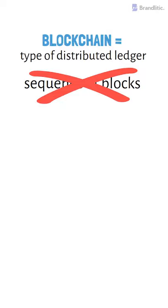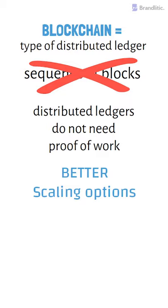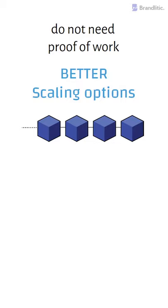Furthermore, distributed ledgers do not need proof of work and offer theoretically better scaling options. Unlike blockchain, a distributed ledger does not necessarily need to have a data structure in blocks. A distributed ledger is merely a type of database spread across multiple sites, regions or participants.